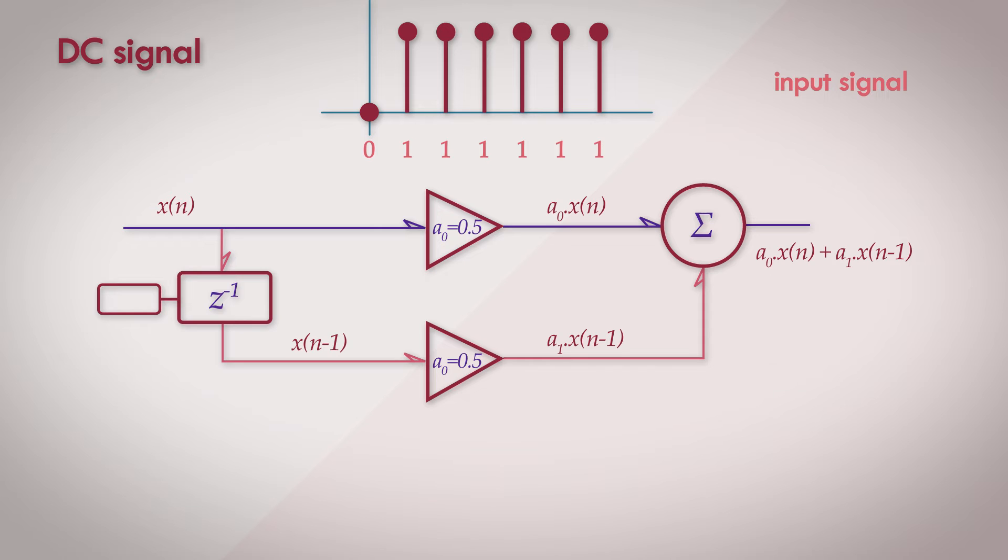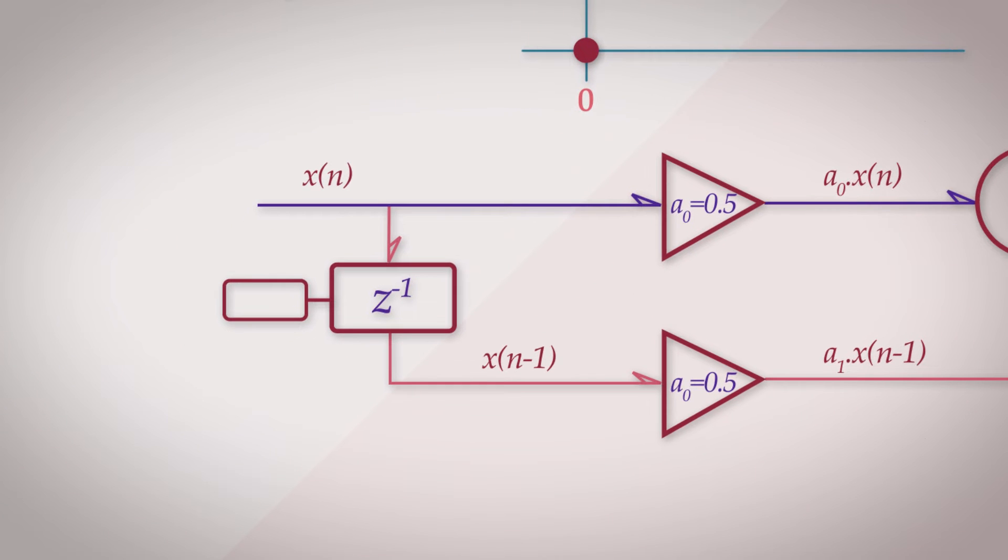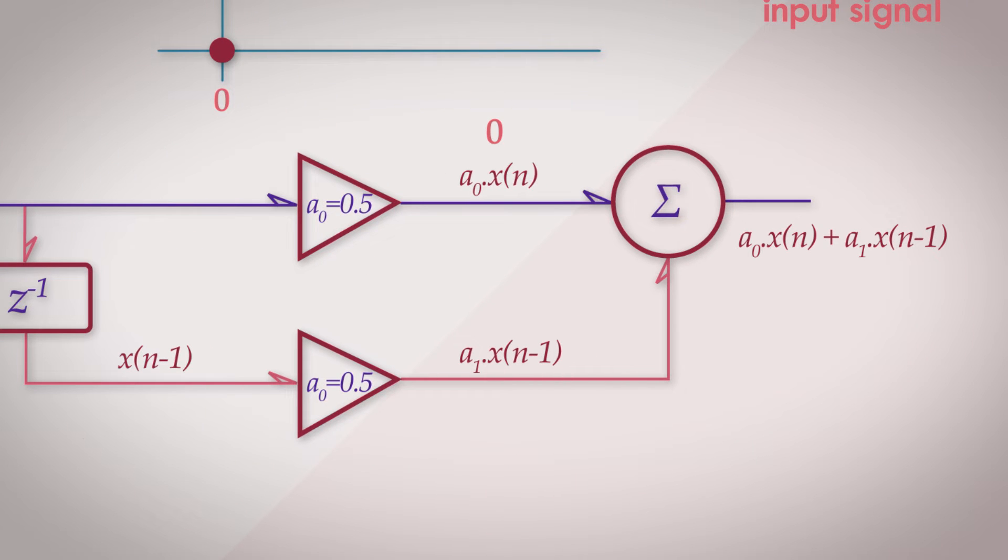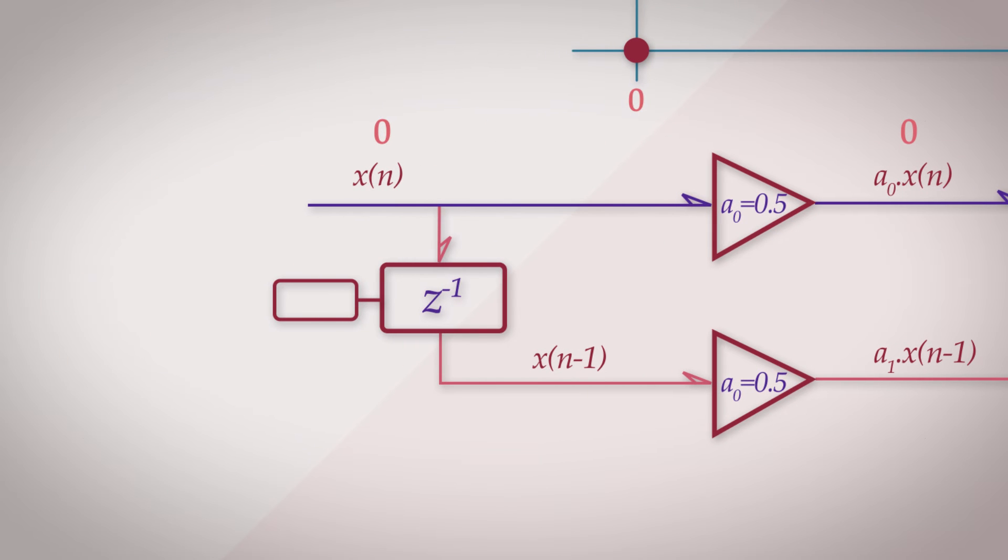Let's start with the first signal, the DC or step signal. The input sample series is 0 followed by a steady stream of 1s. Let's iterate through the samples and see what we get. The first sample that enters is 0. So using the difference equation, the output signal is just the direct sample, whose value is 0 multiplied by the coefficient of a0 which is 0.5, added to the delayed sample that was previously in the register. Now since this is the very first pass through the filter, there was nothing that was previously in the register. In this case, a default steady state of 0 is assumed.